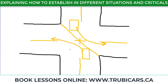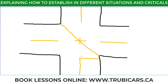Let me show you the common critical errors when people establish, because a lot of times they think they've established properly but in reality they have not. The first critical error is not going far enough into the intersection. Sometimes students just stop a little bit past the stop line and sit there. If the light is green and you are the first car, you have to go a little bit more into the intersection to claim it — otherwise it doesn't look like you're even in the intersection.